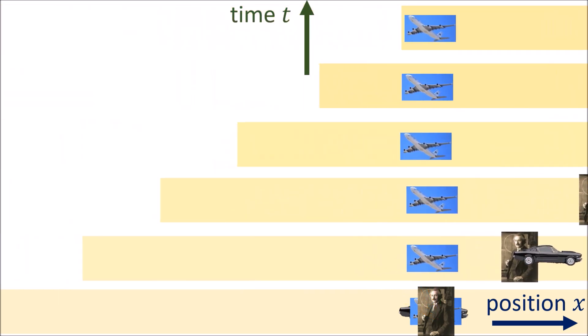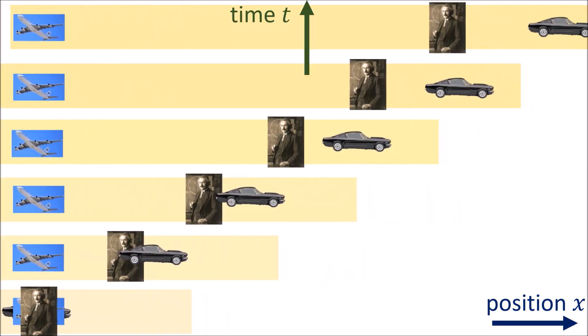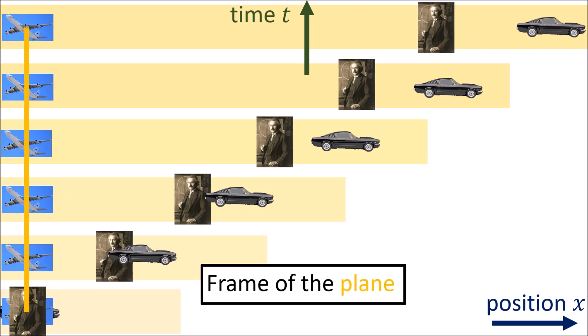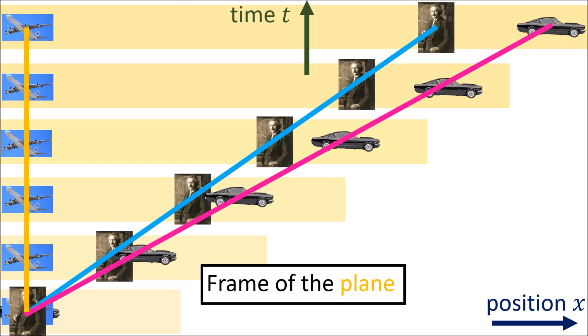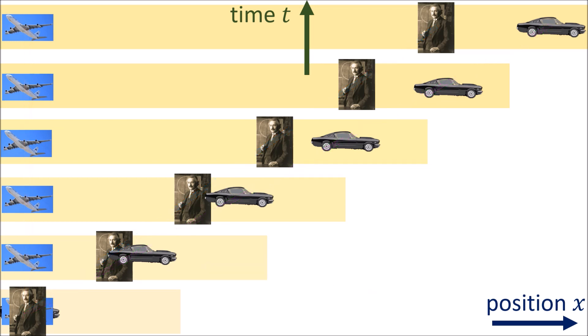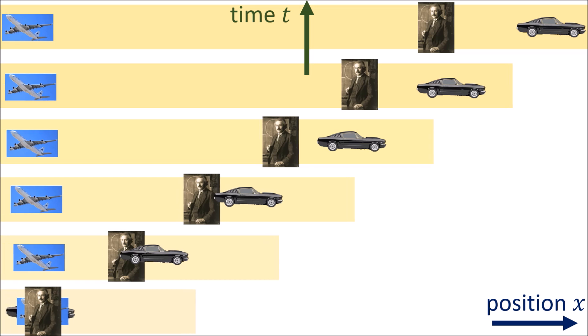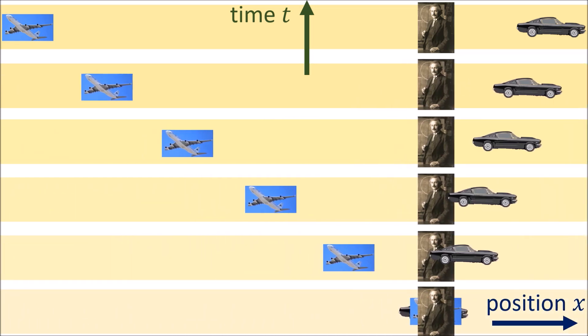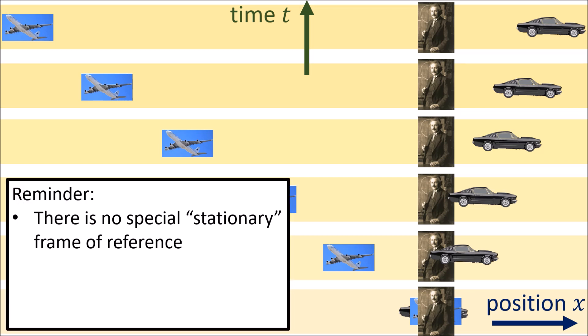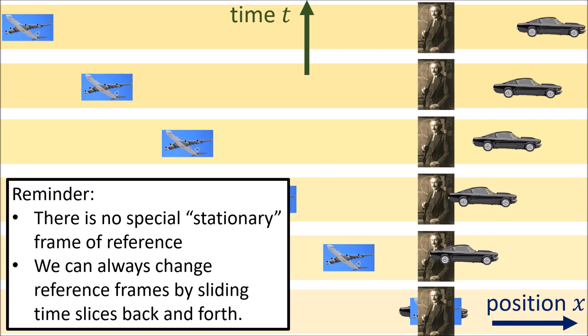We can also arrange the photographs so that the plane's world line is vertical. This shows the plane's frame of reference, where the plane is stationary. The scientist is traveling fast off to the right, and the car is traveling to the right even faster. So remember that we can always rearrange a spacetime diagram so that any object of our choice is stationary — all we have to do is rearrange the time slices to make that object's world line vertical. In Galilean relativity there is no special stationary frame of reference; we can always change reference frames by sliding the time slices back and forth.